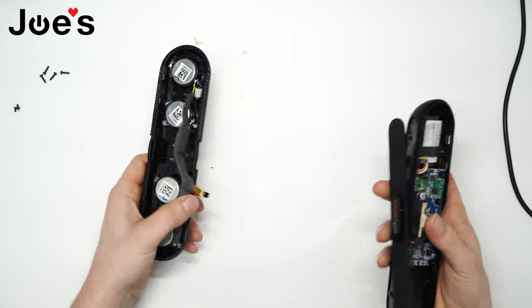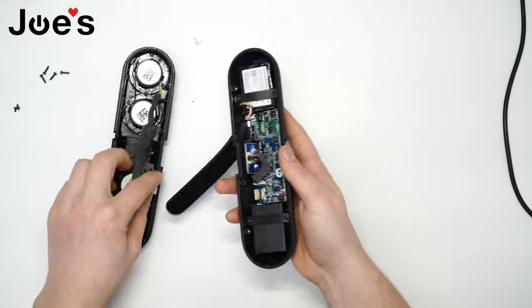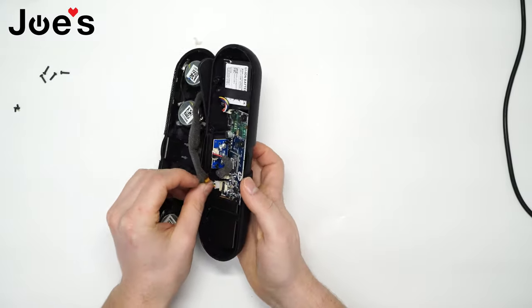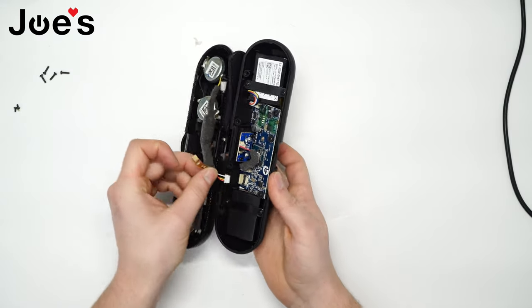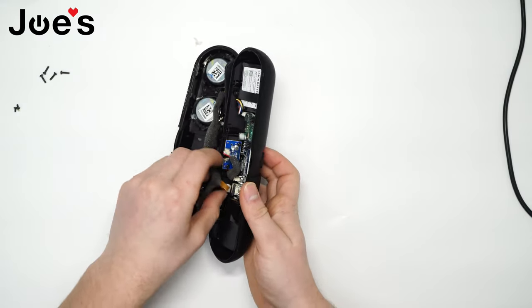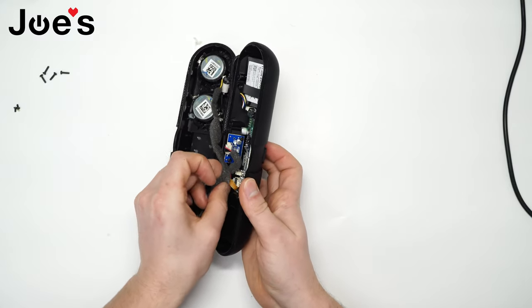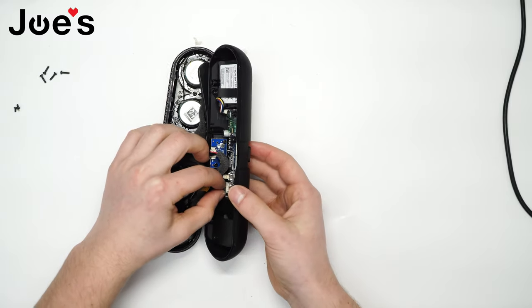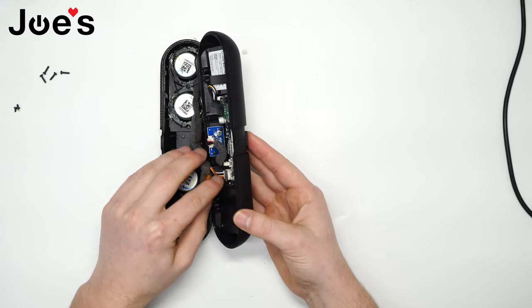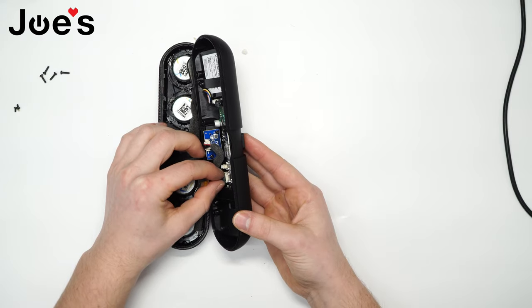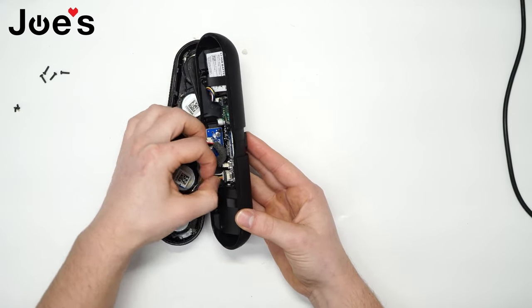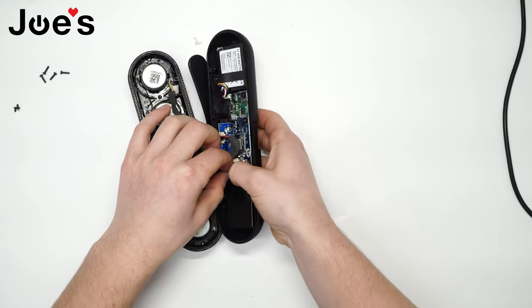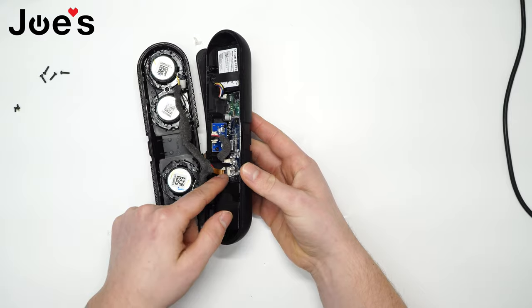Next, let's put this unit back together, starting with the ribbon cables and connectors. Have the next one, this black tab, lift it up before you slide in this orange ribbon. Slide it in and push down to secure it.